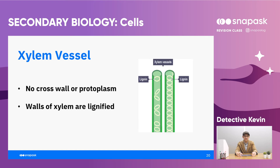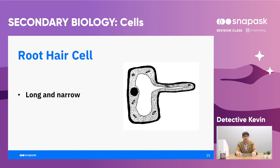The xylem vessel is a dead cell with no cross wall or protoplasm. This allows water to move through the lumen much more quickly and easily. The walls of the xylem are lignified, which prevents the vessel from collapsing by providing mechanical support. The root hair cell is long and narrow, which increases the surface area to volume ratio to allow water as well as mineral salts to be efficiently absorbed.